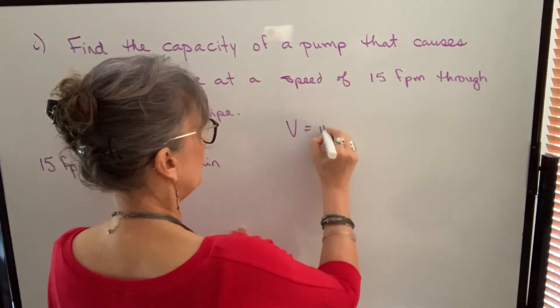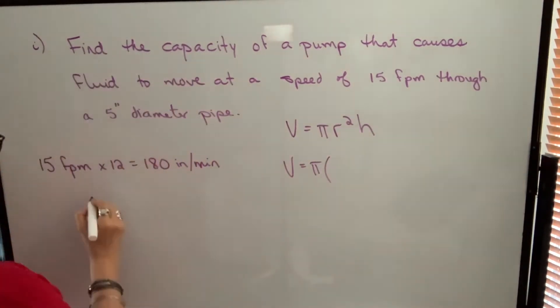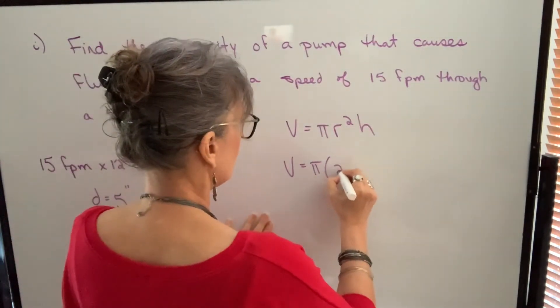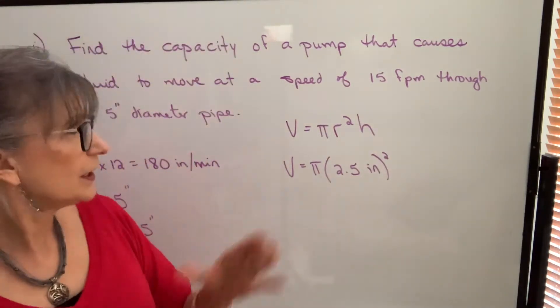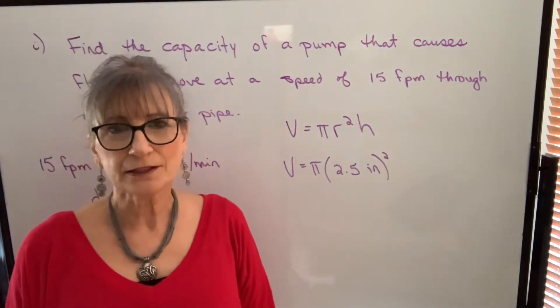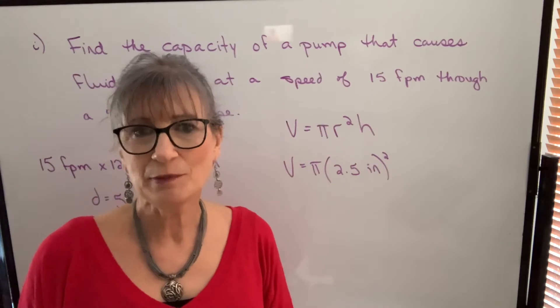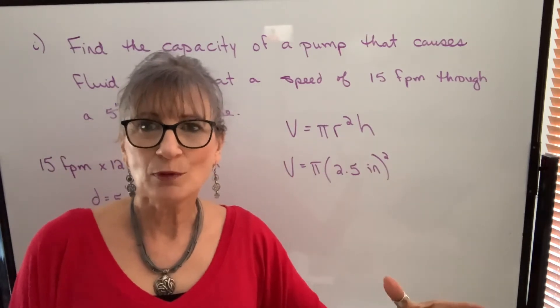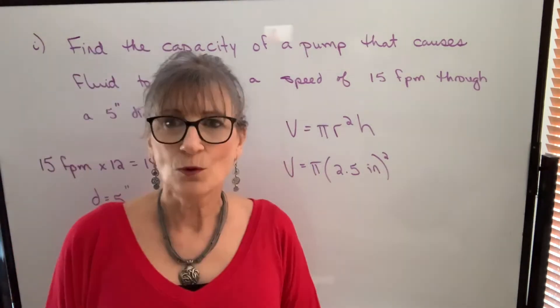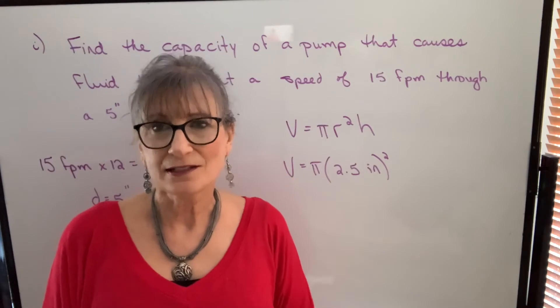So we plug everything into our volume formula. If the diameter is five inches, that means that the radius is two and a half inches. So the radius will be 2.5 inches and we're squaring that. Now, if the fluid is moving at 15 feet per minute, we think of that as the height. It really isn't going to be the length or the height of that pipe. It's how far that fluid will travel in a minute of operation. So the length or the height of that pipe would need to be 180 inches to hold all of the fluid that's pumped in one minute. So it's not really the height of the pipe, but we think about it as height in terms of our formula.